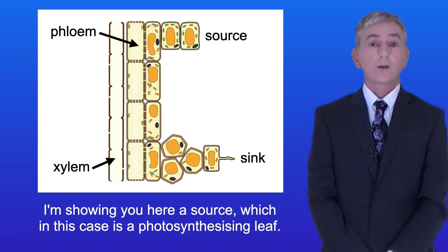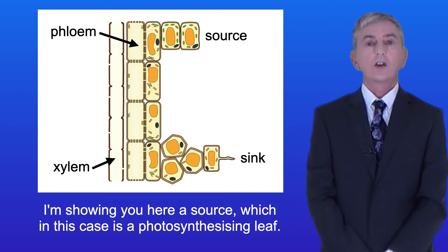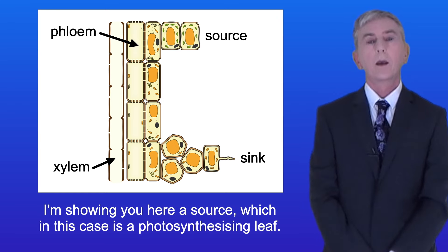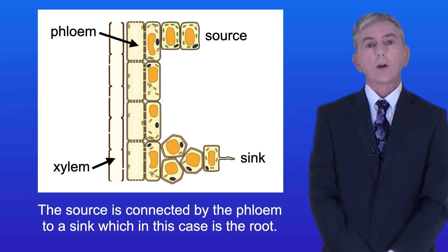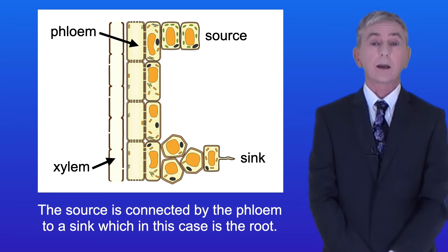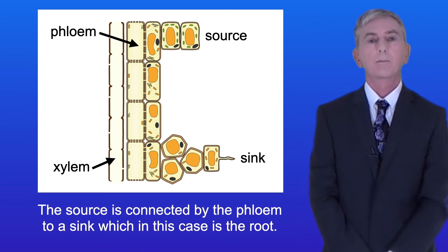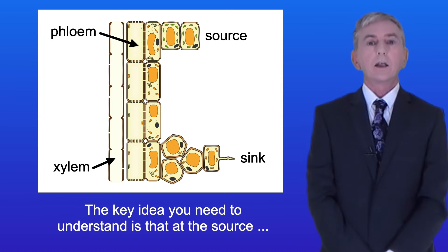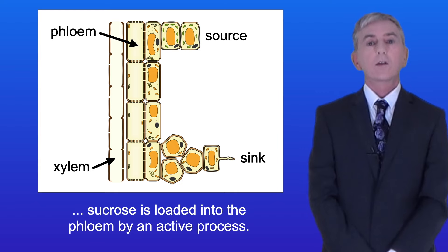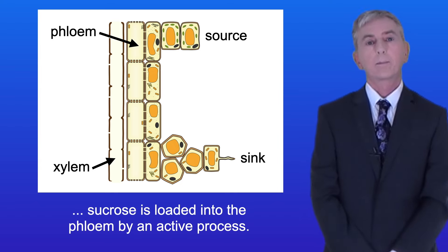Here is a source, which in this case is a photosynthesizing leaf. The source is connected by the phloem to a sink, which in this case is the root. The key idea you need to understand is that at the source sucrose is loaded into the phloem by an active process.